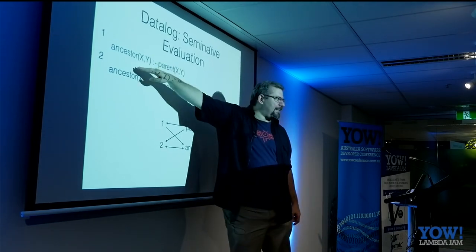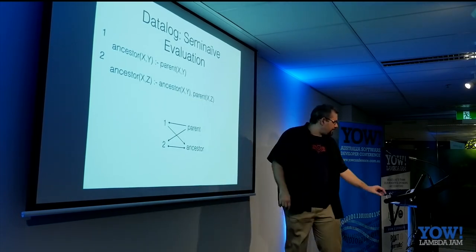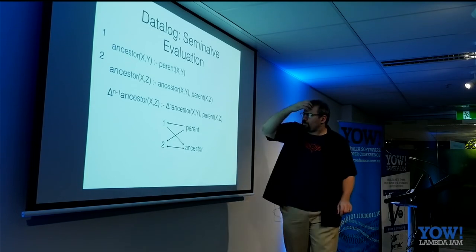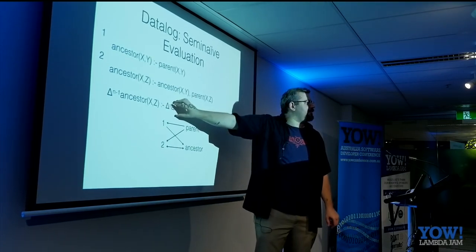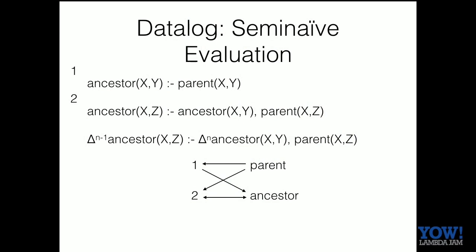We can work even smarter by looking at just the deltas — the new ancestors — because those are the only things we have to join against the parent table. The old ancestors, we already joined and merged. So the new delta at step n+1 is driven by the old delta joined with the parent table. If this delta is only four new entries and the table is a million items, we're not joining a five-million-item table against a one-million-item table to find five more things to do next round. This notion of building these deltas is something we can do in general.